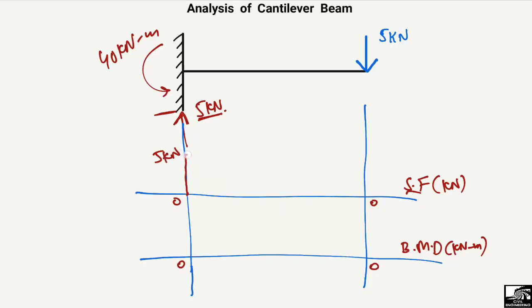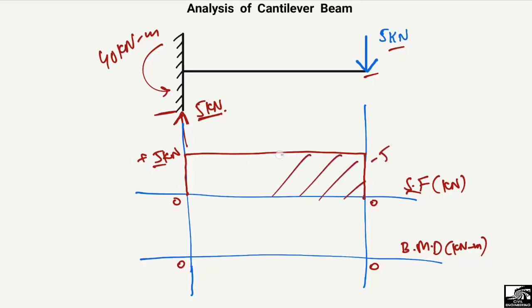There is no load acting along the span, so it will be a straight horizontal line. Then at the free end there is 5 kilonewton acting downward, which cancels the plus 5 kilonewton, bringing it back to zero. This is the shear force diagram for this beam.